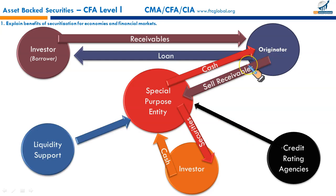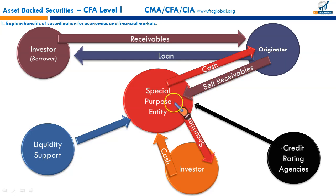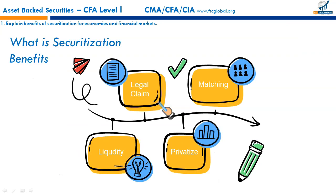Securitization involves transferring ownership of assets from the original owner to a special legal entity — sometimes called the special purpose entity or special purpose vehicle — which then issues asset-backed securities backed by those transferred assets. The securitized assets are usually loans, receivables, and mortgages. Pooling these assets creates asset-backed securities.